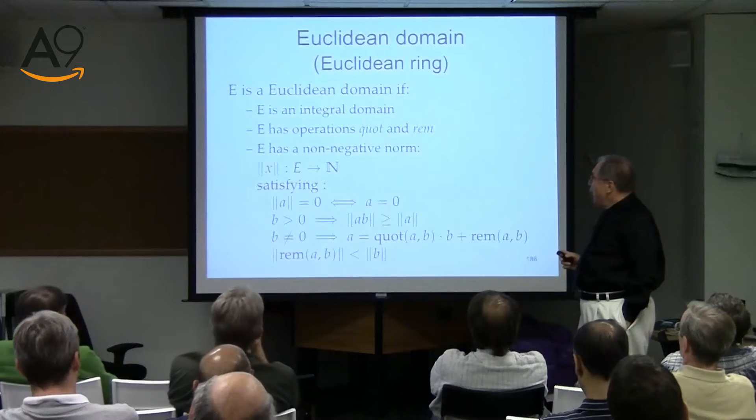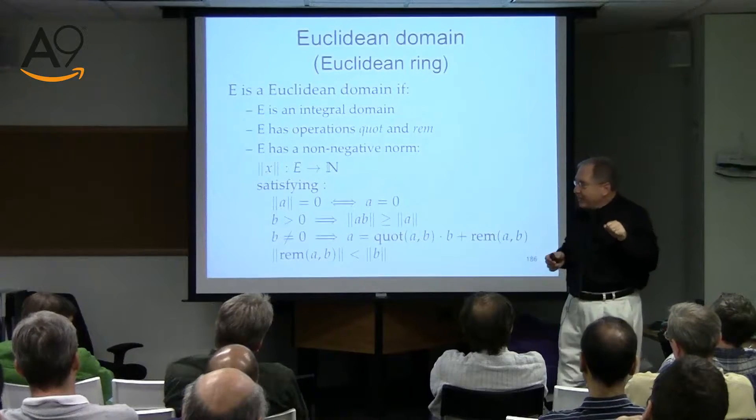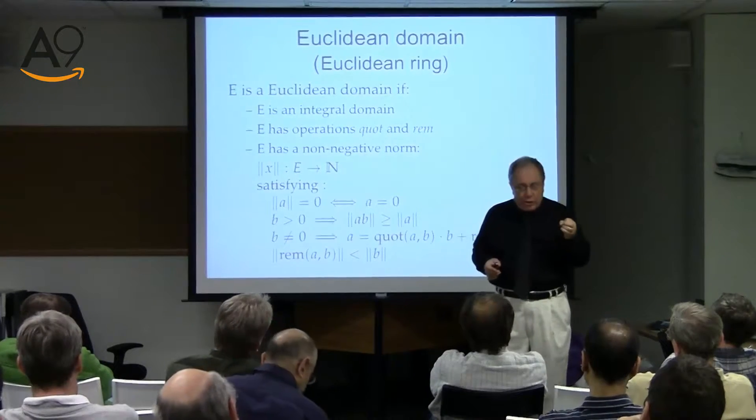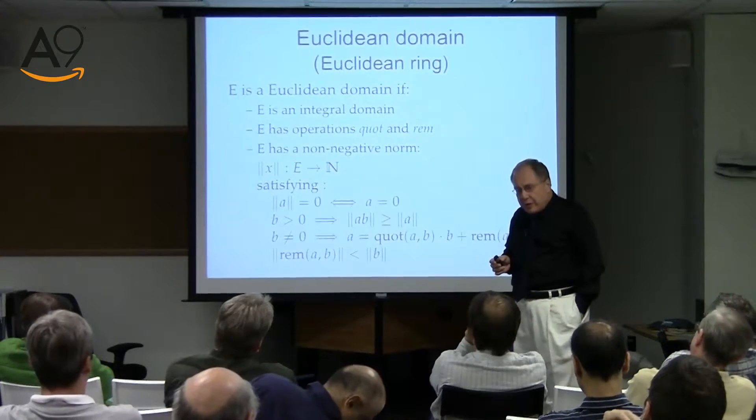Finally, we make a major step forward. Our goal is to find the correct setting for Euclid's algorithm for GCD. This is where we define — or at least introduce — the notion of Euclidean domain. You may also encounter the term 'Euclidean ring'; there's no standard, but the majority say 'Euclidean domain.'